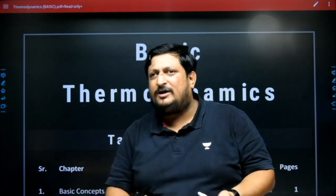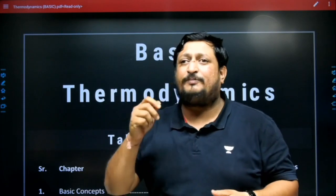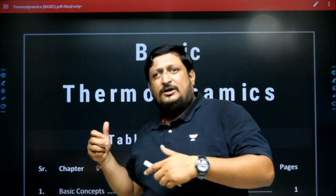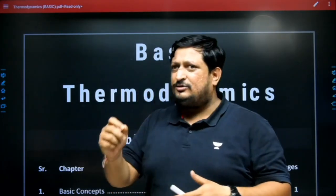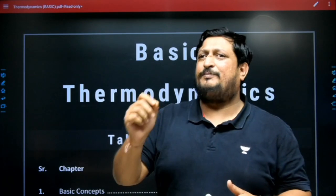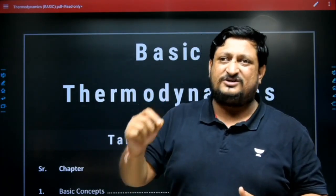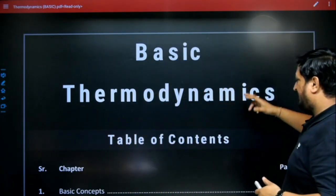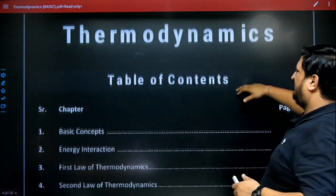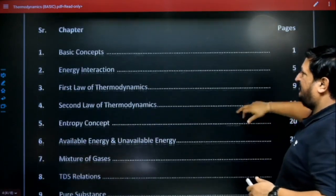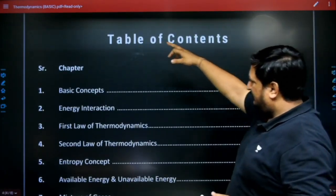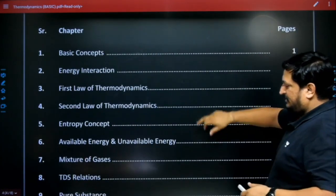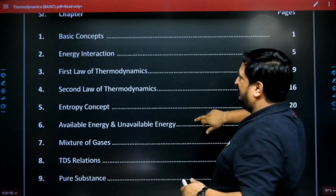What are the main features, what are the best features of this course? This is the best recorded course in English version. We will discuss about basic thermodynamics. This is the workbook of Gate Academy — there are nine chapters in this workbook.